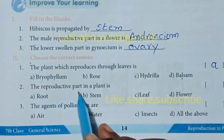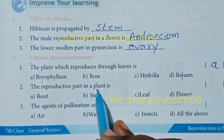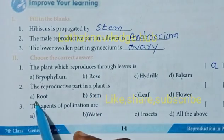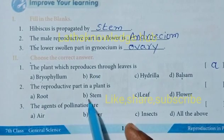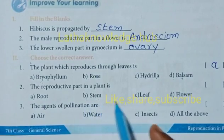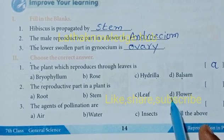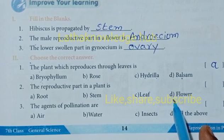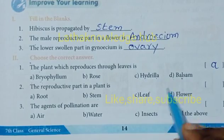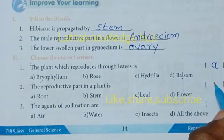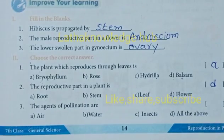The reproductive part in a plant is: a. Root, b. Stem, c. Leaf, d. Flower. Which one helps in reproduction? Yes, d. Flower. Flower helps in reproduction in plants generally.